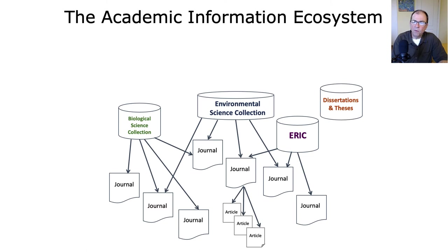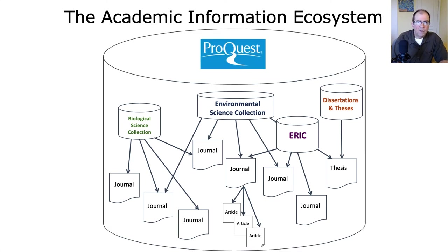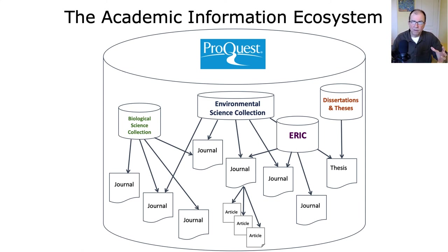To complicate things further, some journals may only be found in one particular database. We also have databases that specialize in certain types of content, like theses and dissertations, which may have no journal articles at all. However, other databases may be able to reach out and access those particular content types. On top of all that, there are companies like ProQuest who either own databases outright or license them from other information providers and producers — meaning one platform may encompass a lot of information within its scope.